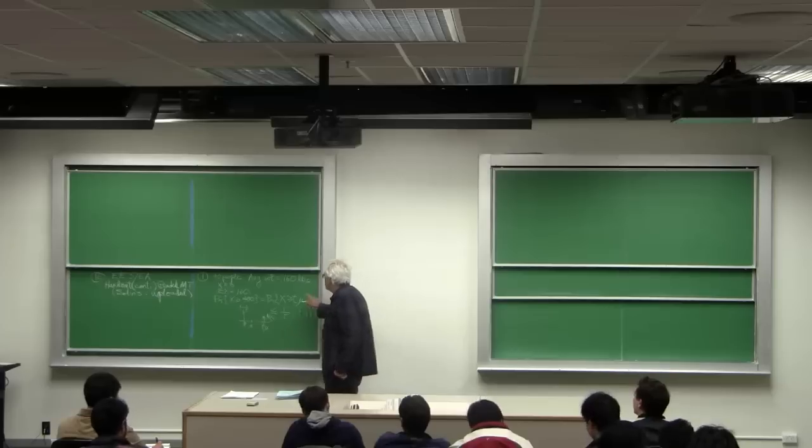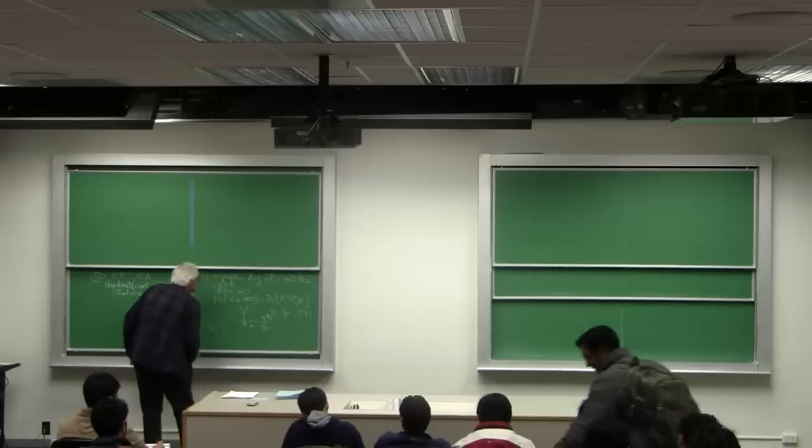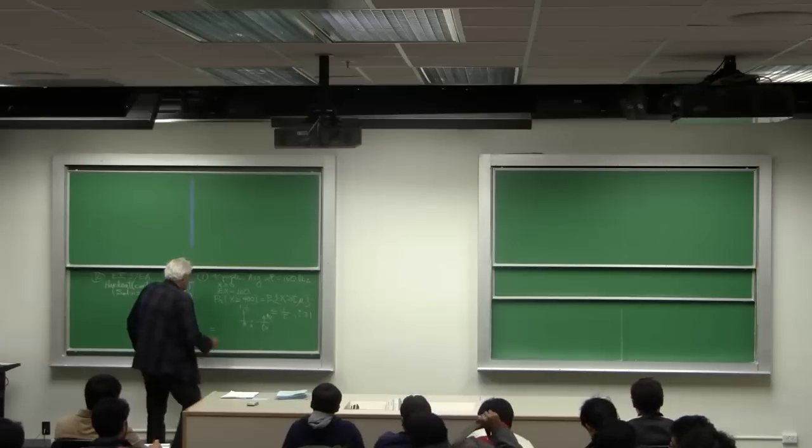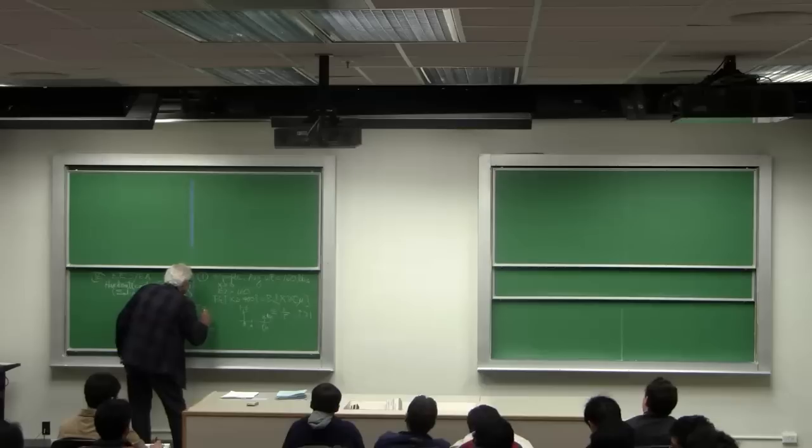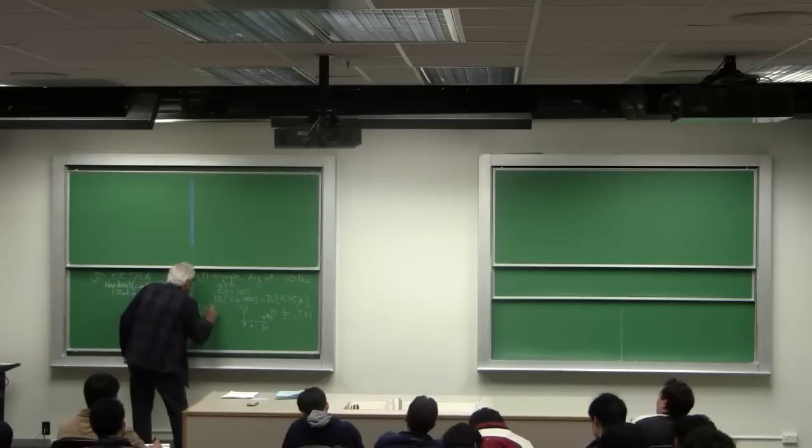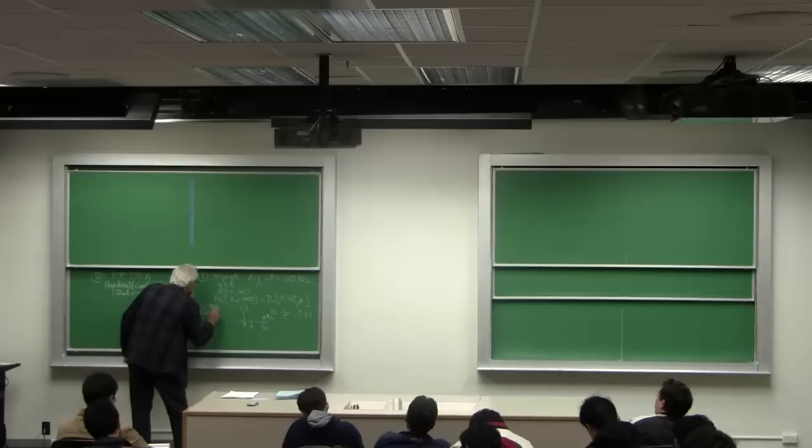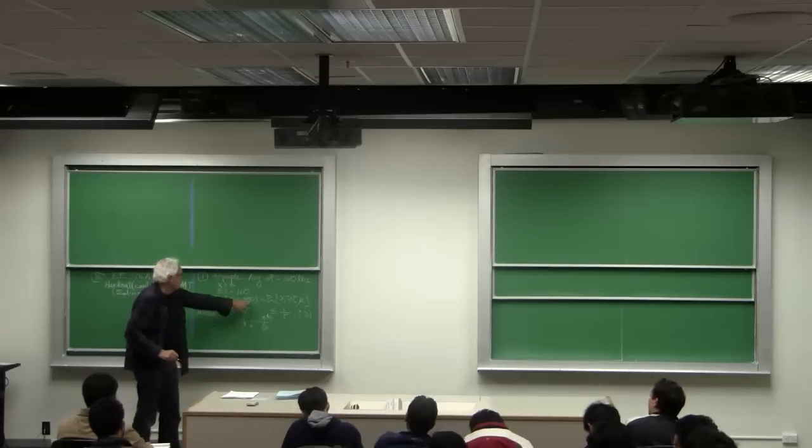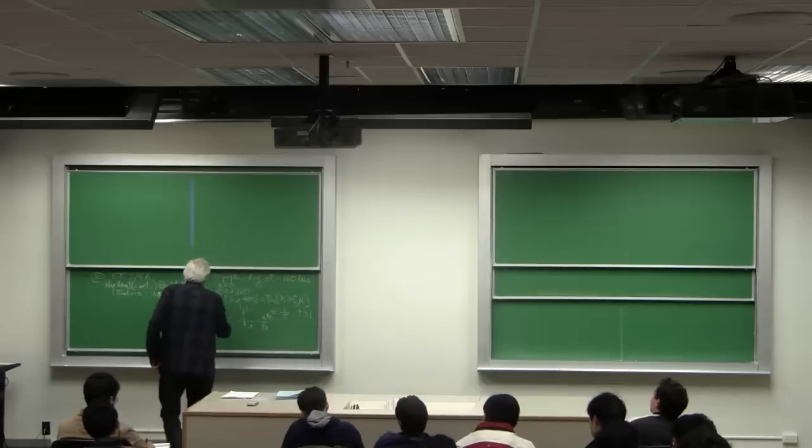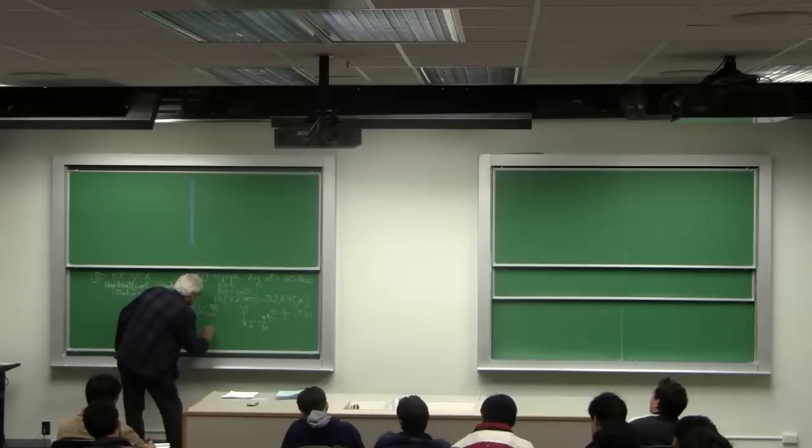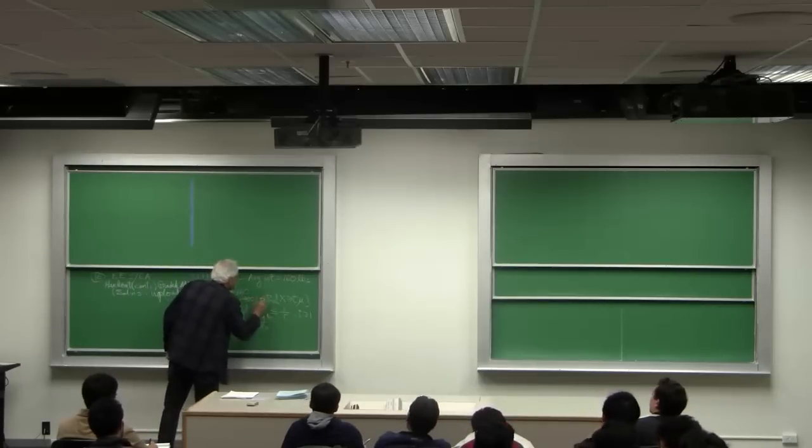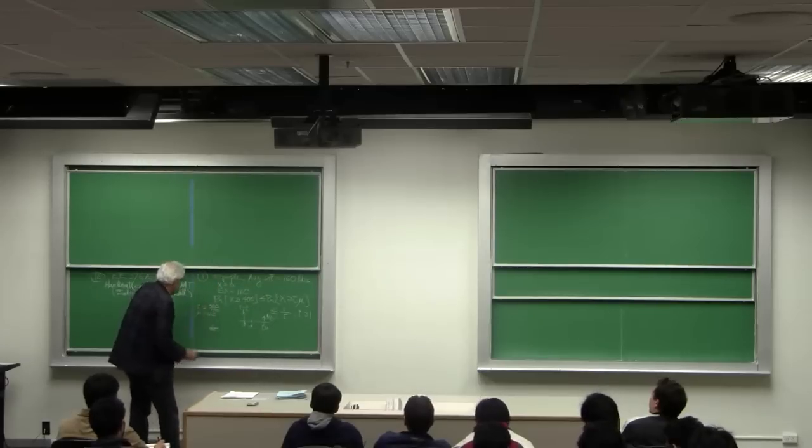And so for this problem, it is mu equals 160, and t is equal to 400 over 160. And then t mu is 400. That's the statement here. And so this probability is less than or equal to this, which is 2 fifths.